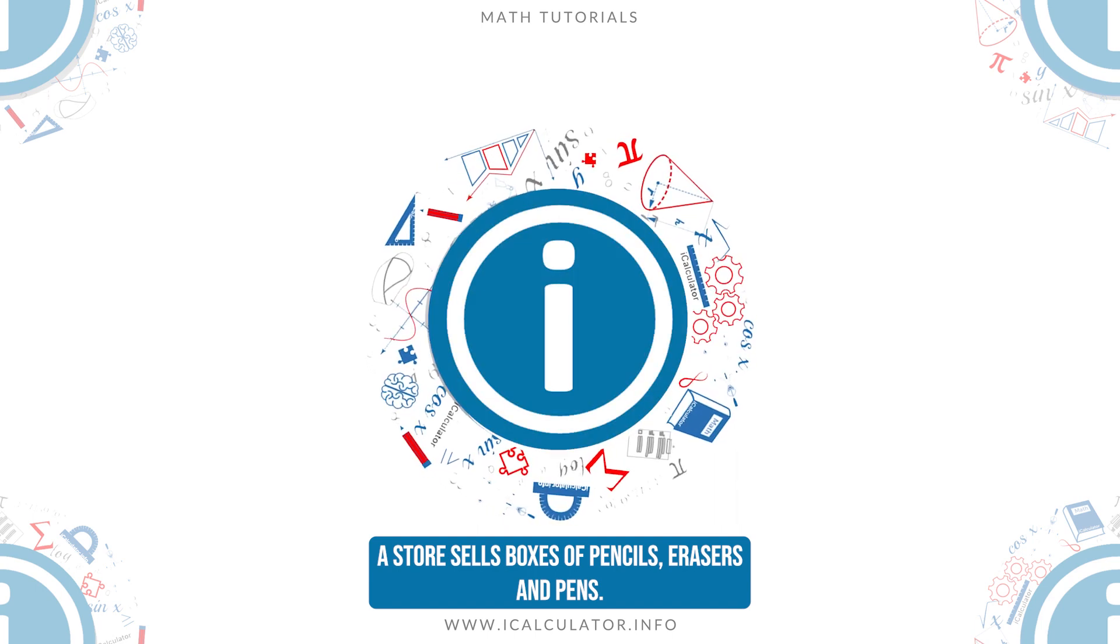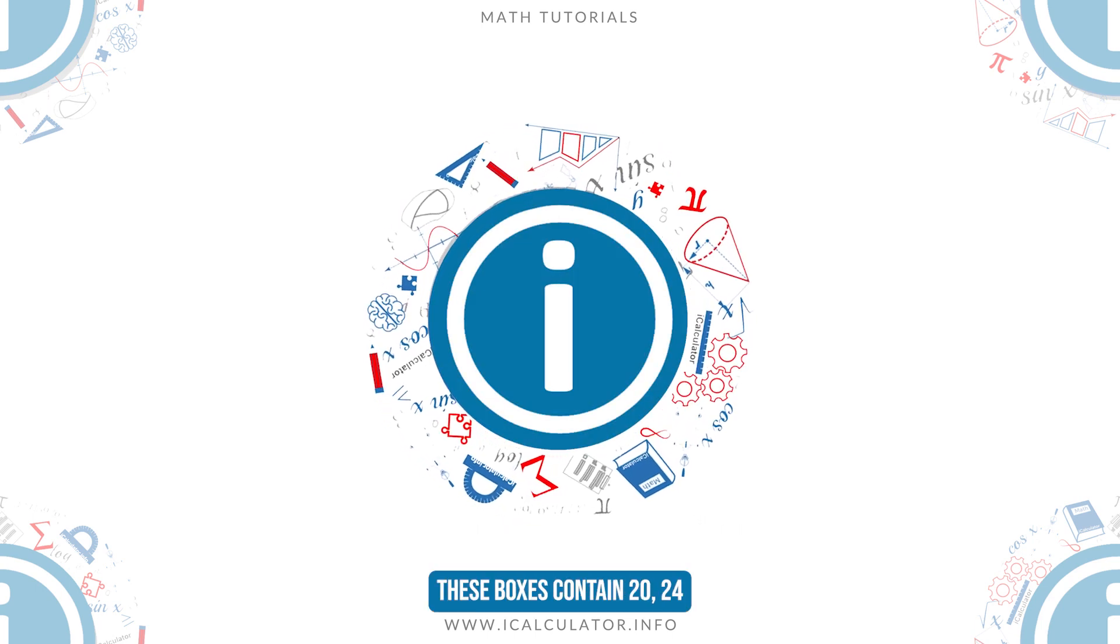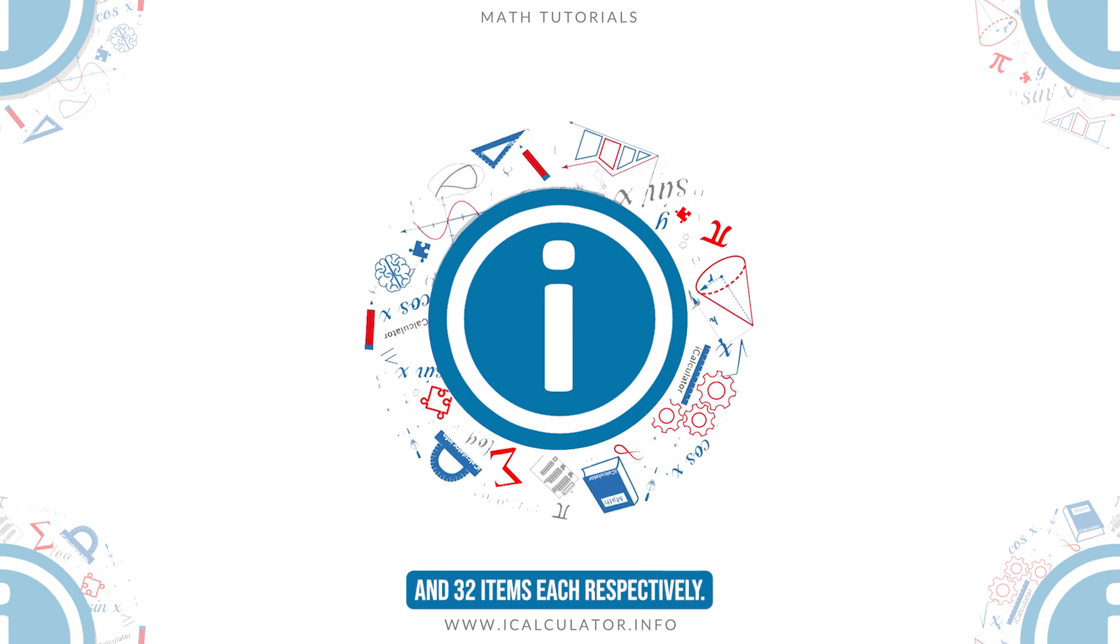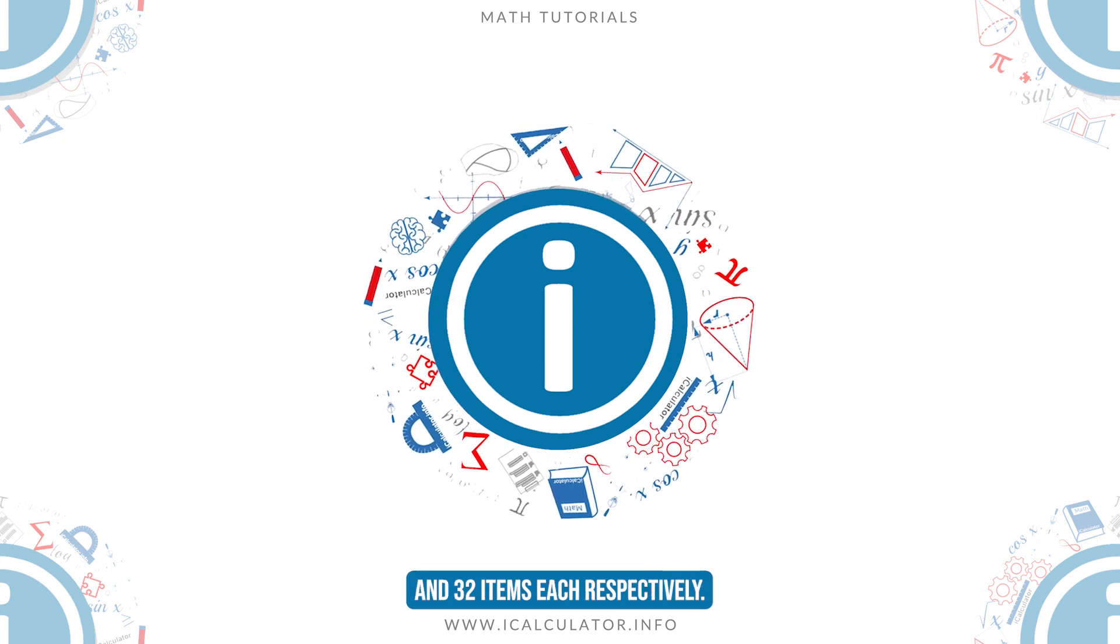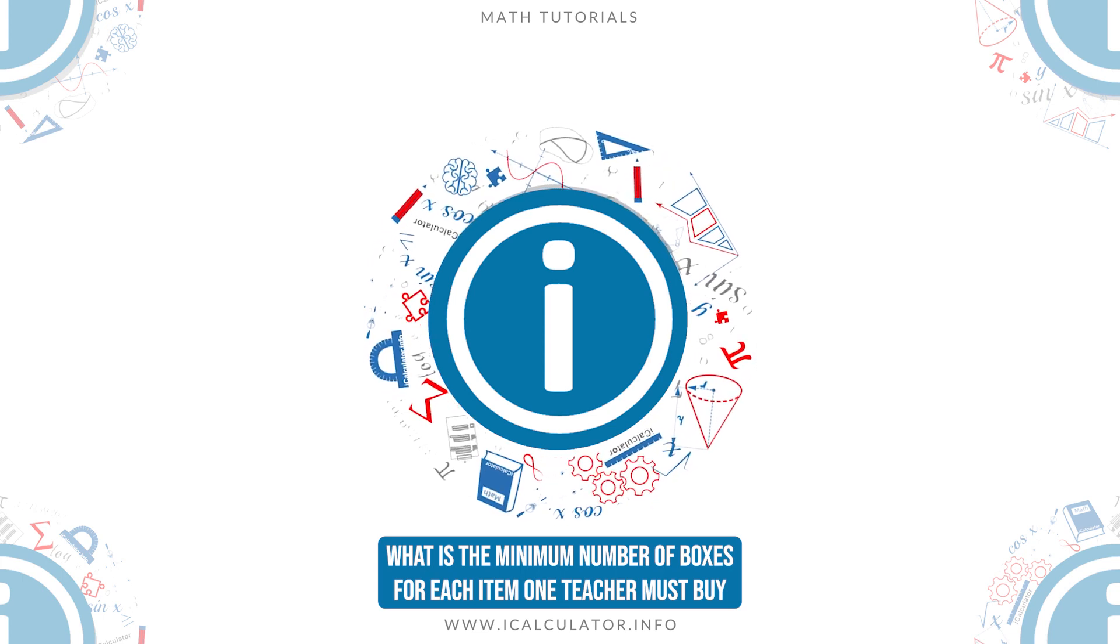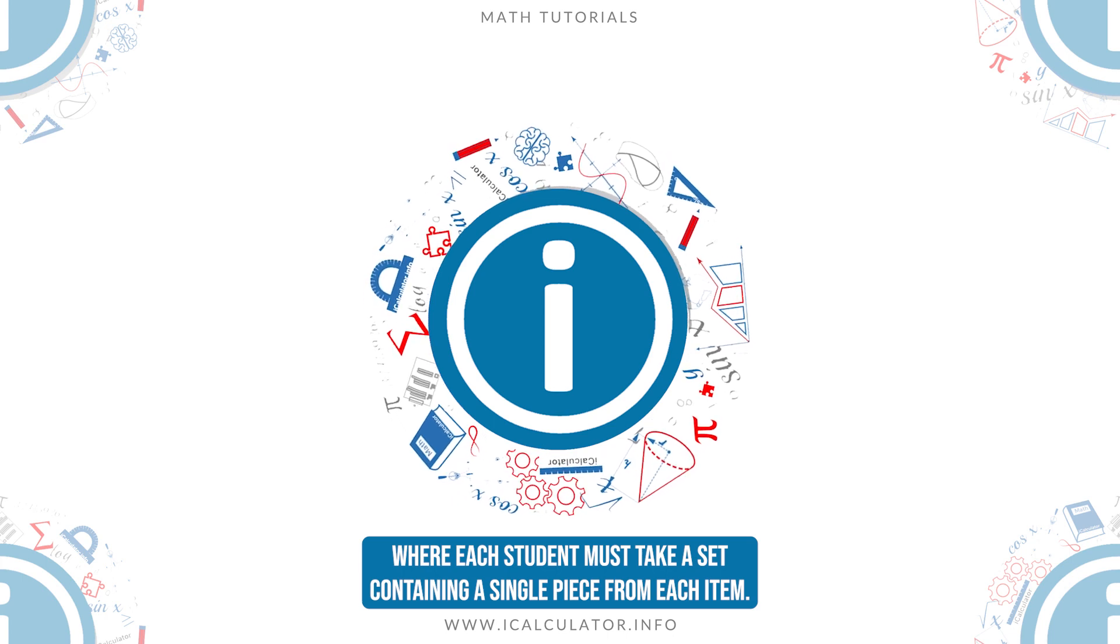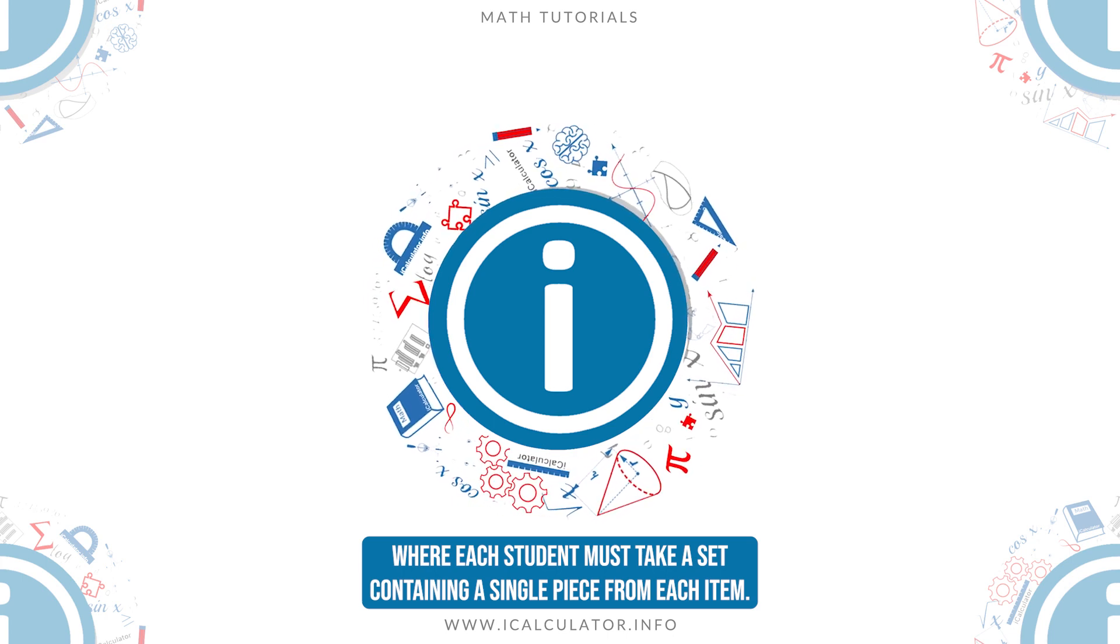Example 3. A store sells boxes of pencils, erasers, and pens. These boxes contain 20, 24, and 32 items each respectively. What is the minimum number of boxes for each item one teacher must buy if he has to distribute them to his students, where each student must take a set containing a single piece from each item.